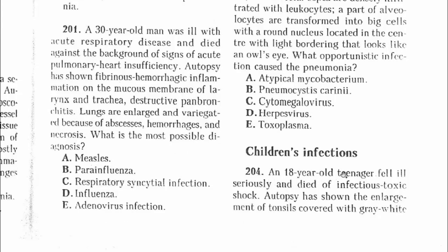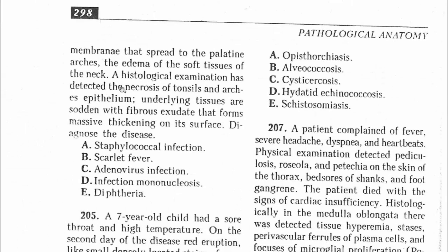Children's infections. Question 204: An 18-year-old teenager fell ill seriously and died of infectious toxic shock. Autopsy showed enlargement of tonsils covered with a gray-white membrane spreading to the palatine arches; edema of the soft tissue of the neck; necrosis of tonsils and arch epithelium; tissues soaked with fibrous exudate forming massive thickening. Because of the massive fibrinous necrotic membrane that is not easily removed from the tonsils, the answer is diphtheria — E.